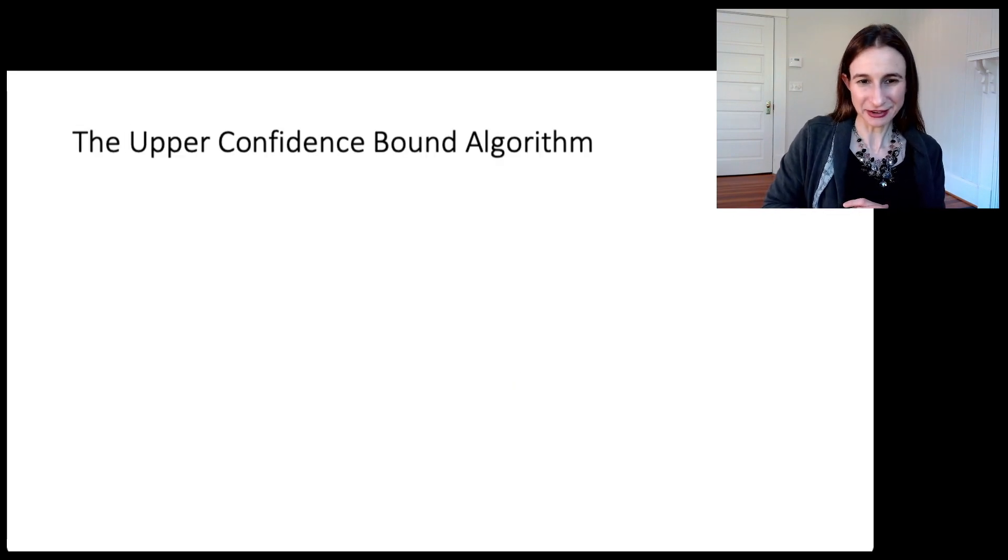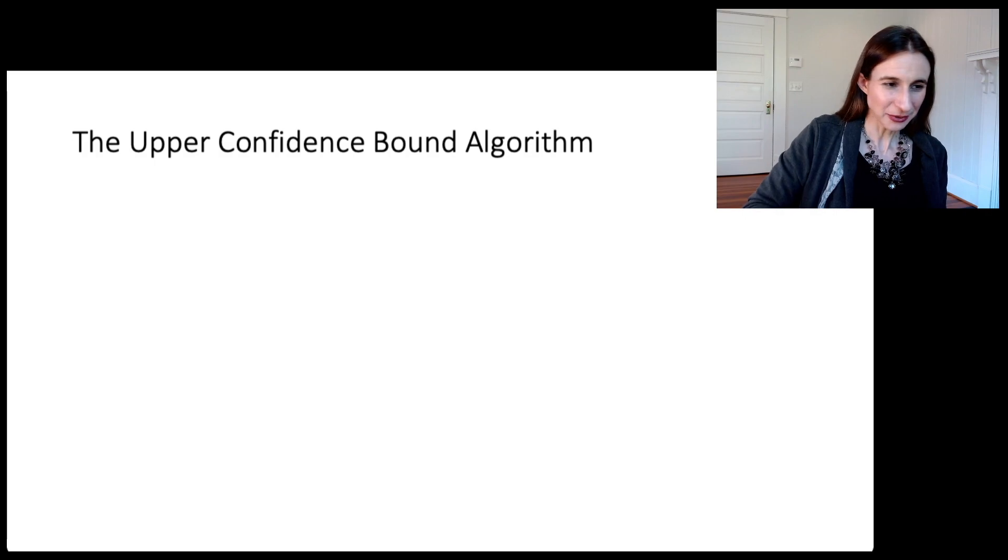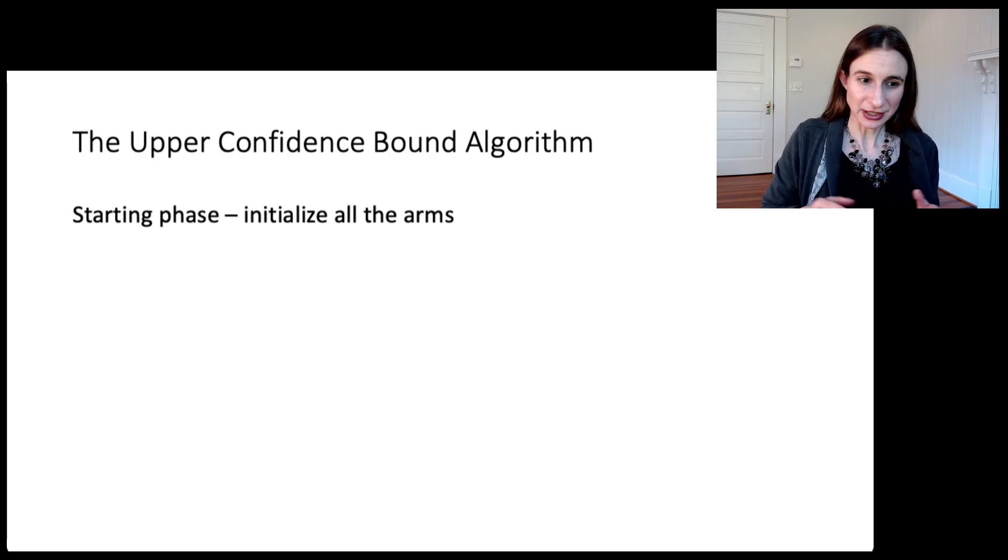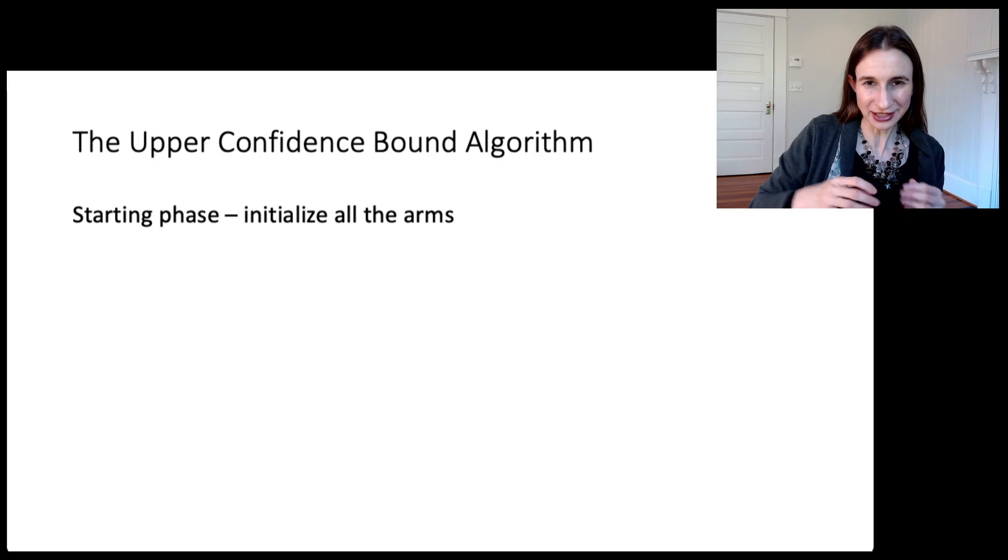So I'm going to give you some algorithms for multi-armed bandits. The first is the upper confidence bound algorithm. It's called UCB. The way the UCB algorithm works is that there's a starting phase where you initialize all the arms because you just walked into the casino. You don't know which arm's the best. So you pull each arm once.